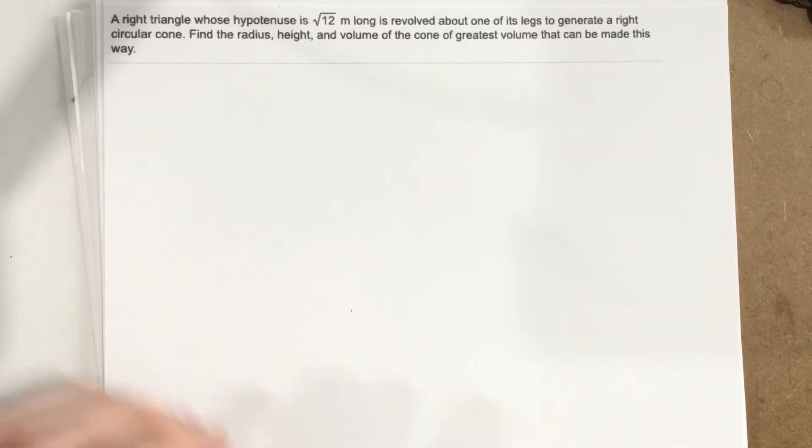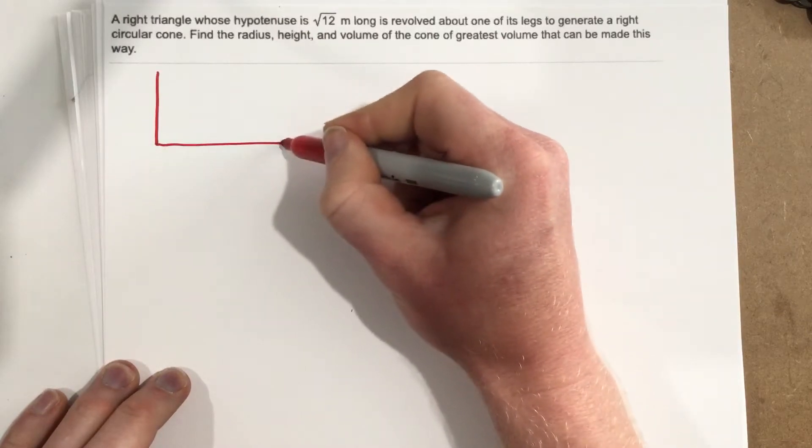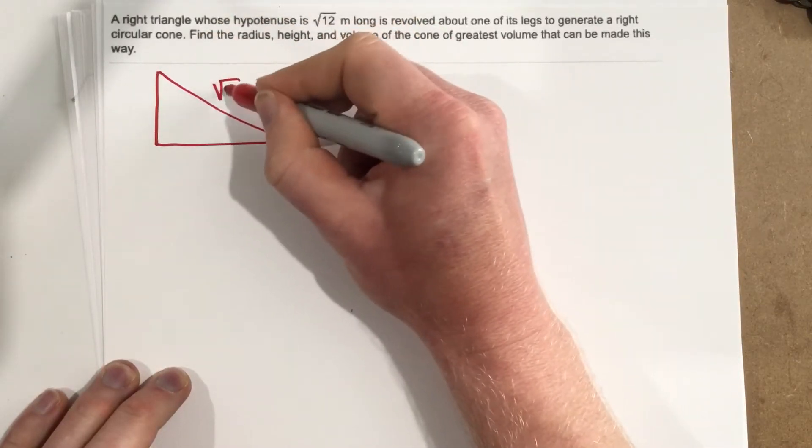So let's draw the right triangle first. We know the hypotenuse of the right triangle is √12.